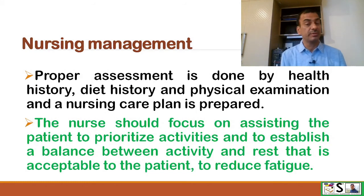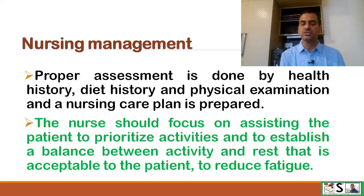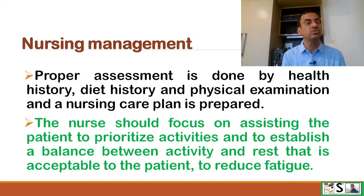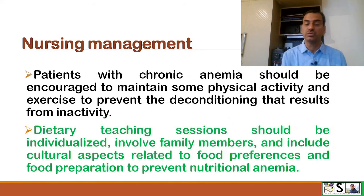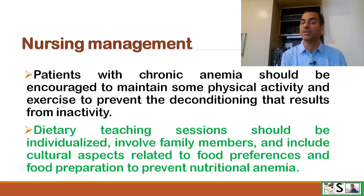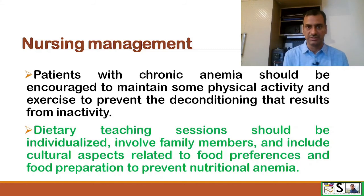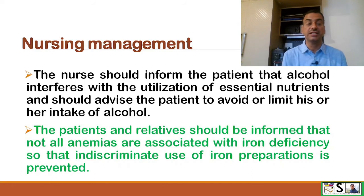Nursing management. Proper assessment is done through health history, diet history, and physical examination, and a nursing care plan is prepared. The nurse should focus on helping the patient prioritize activities and establish a balance between activity and rest to reduce fatigue. Patients with chronic anemia should be encouraged to maintain some physical activity and exercise to prevent deconditioning. Dietary teaching should be individualized, involve family members, and include cultural aspects related to food preferences and preparation to prevent nutritional anemia. The nurse should also inform the patient that alcohol interferes with the utilization of essential nutrients and advise limiting or avoiding alcohol intake.